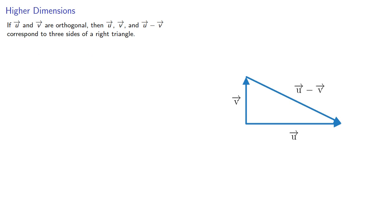The Pythagorean theorem does apply to higher dimensions, and so we have ||u||² + ||v||² = ||u - v||².